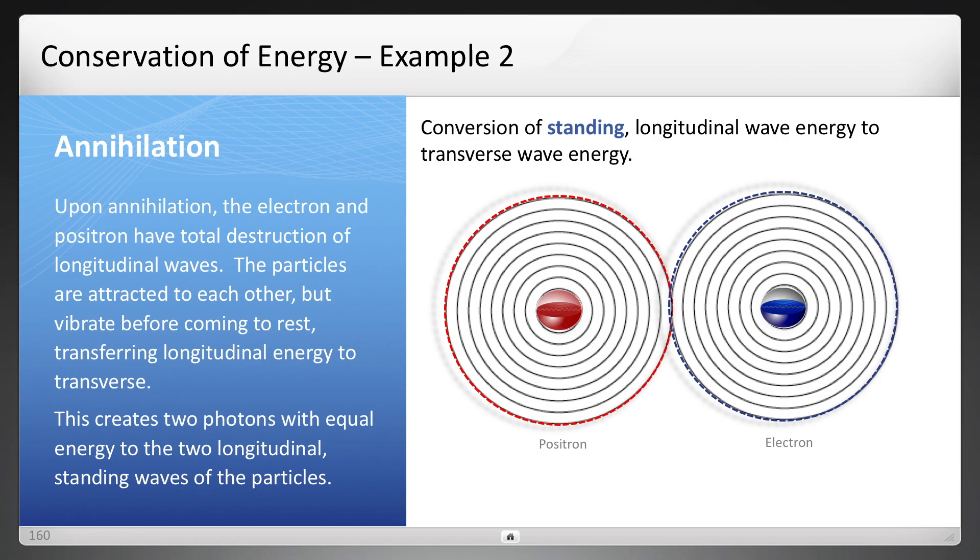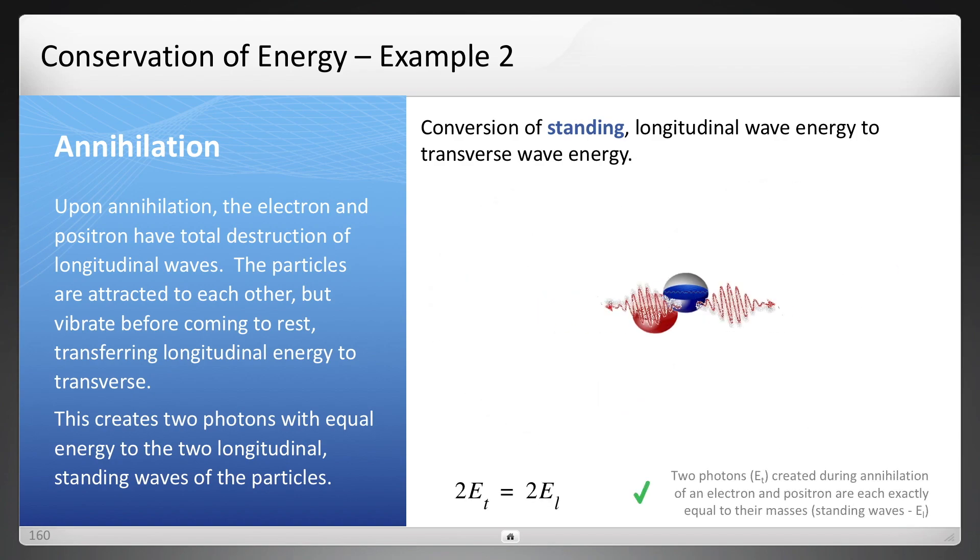Here's another one. Because an electron annihilates with a positron, unlike the proton, it creates that orbit. When an electron annihilates with a positron, now all of that standing wave energy is going to transverse energy. Those particles are still there.